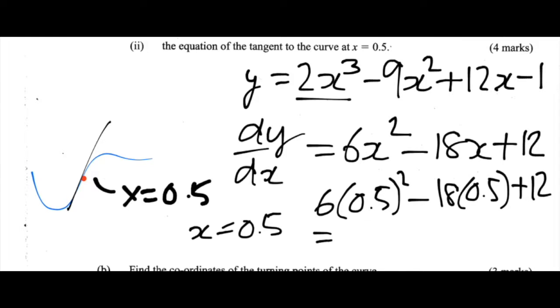That is equal to 6 times by 0.5 squared. That's the same as 6 times by 0.25, or 6 divided by 4, which is 1.5, minus 18 times by 0.5, which is 9, so minus 9, plus 12. And that is equal to 4.5.